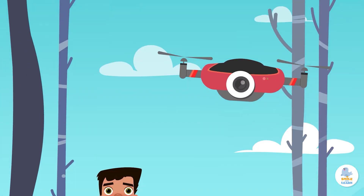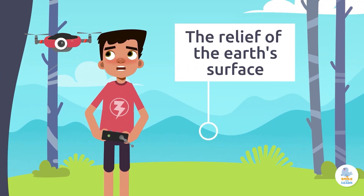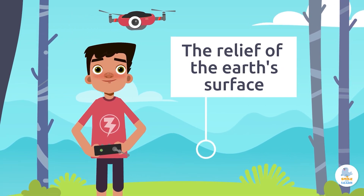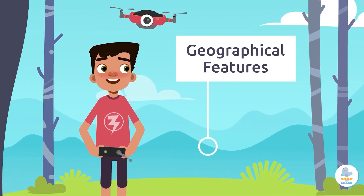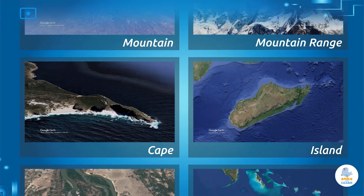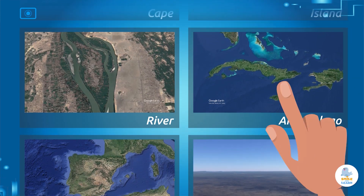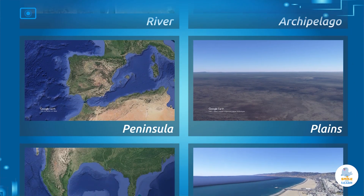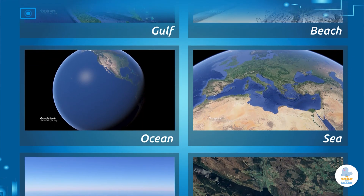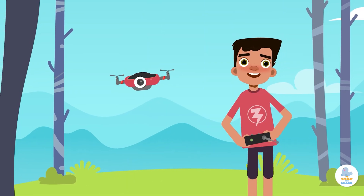This has been a sensational journey! We've learned that the relief of the Earth's surface refers to the elevation changes in the landscape, and that these elevation changes, or landforms, are called geographical features. Mountains, mountain ranges, capes, islands, or rivers make up the Earth's relief. I've taken thousands of pictures and discovered some of the secret marvels of the Earth. See you soon, friends!